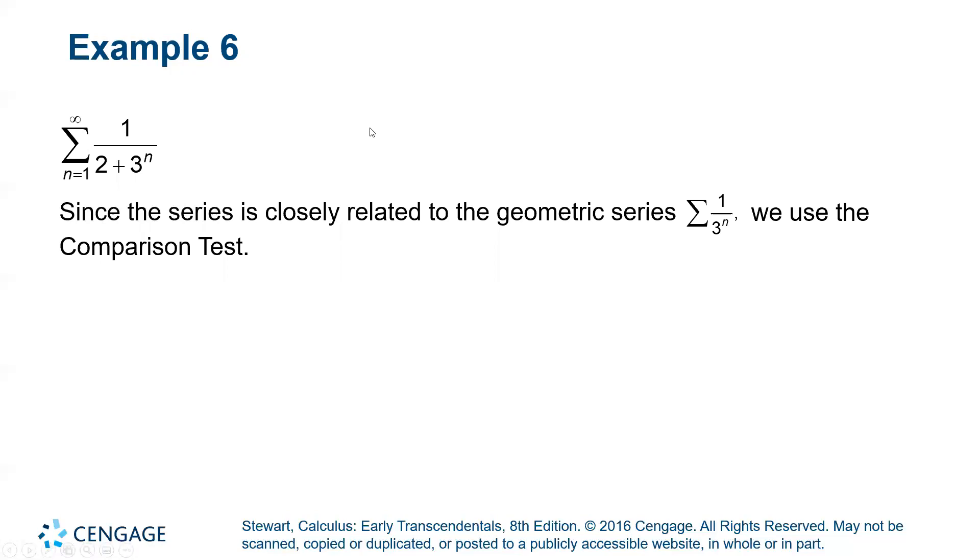Okay, one over two plus three to the n. So in this one what we see is that this series is the closest to a geometric series, one over three to the n. Remember one over n cubed would be a p-series, one over three to the n would be a geometric series. So because it's similar to a geometric series but not directly, just like the first example we can use the comparison test comparing to one over three to the n. And there we go.